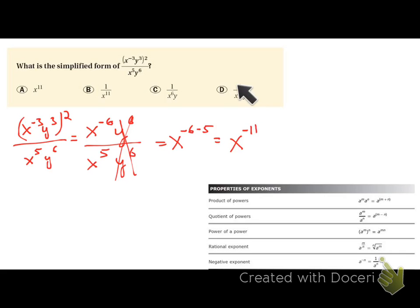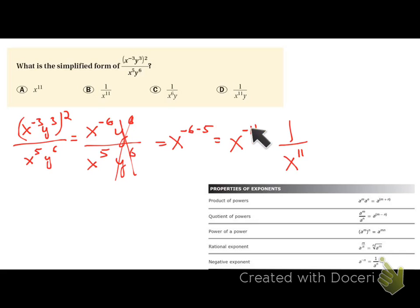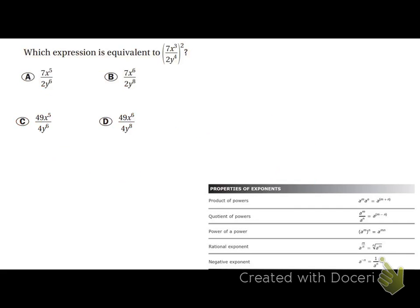Since x to the negative eleventh still has a negative exponent, it's not fully simplified. Apply the negative exponent property — take the reciprocal and make the exponent positive. So x to the negative eleventh becomes 1 over x to the eleventh. That gives us answer choice B.